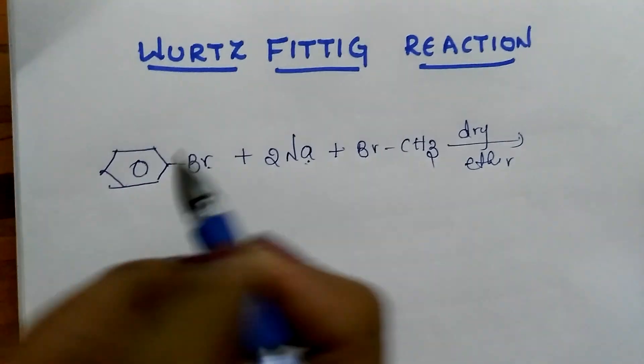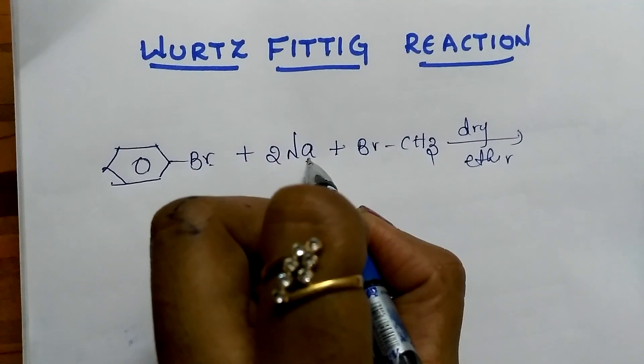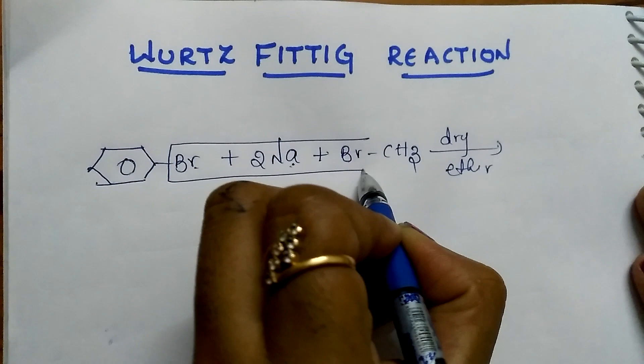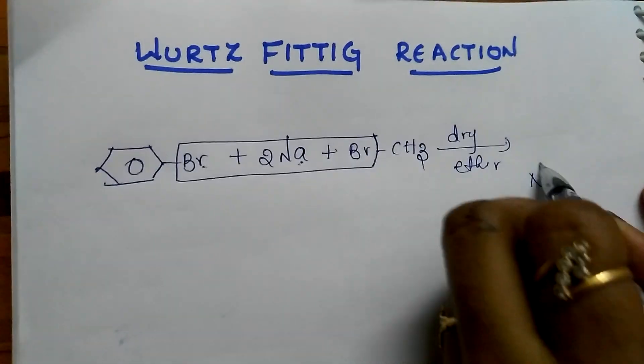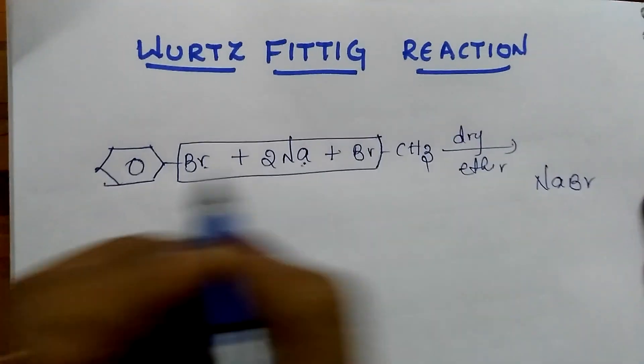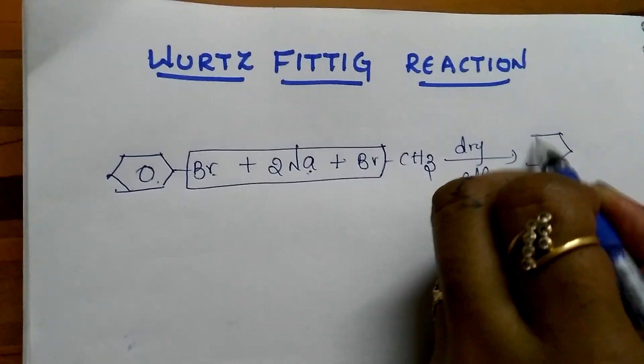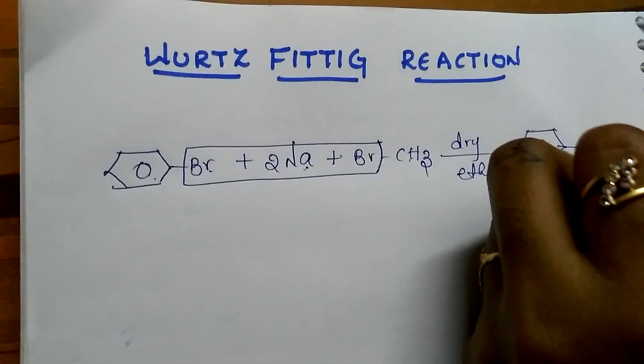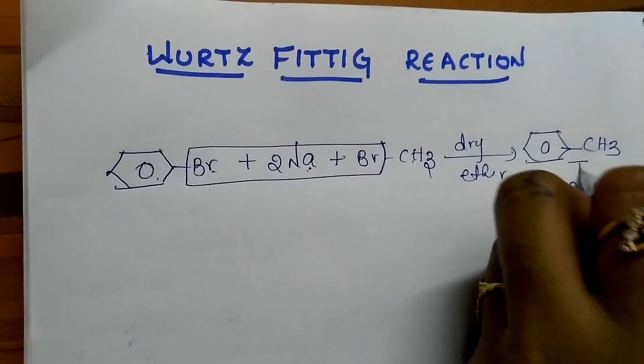NaBr goes as NaBr and one more NaBr is formed. Two molecules of NaBr are formed and this benzene is connected to the CH3. This is toluene.